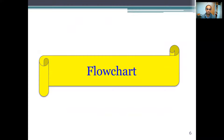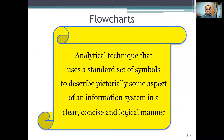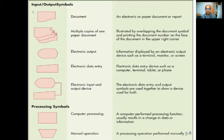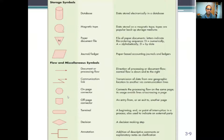What about the flowchart? The flowchart is an analytical technique that uses a standard set of symbols to describe information in a clear, concise, and logical map. In the flowchart we use lots of symbols for input and output. Some symbols are related to documents, some are related to electronic input and output, some are related to processing, some are related to storage, and then the flow.